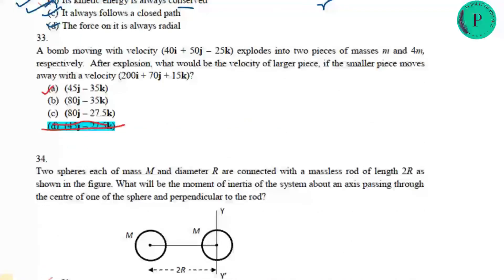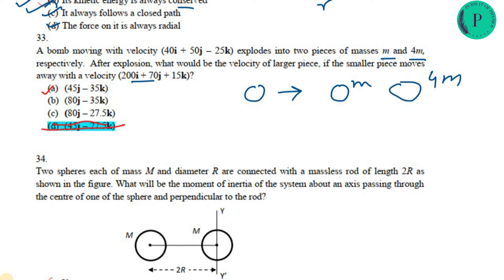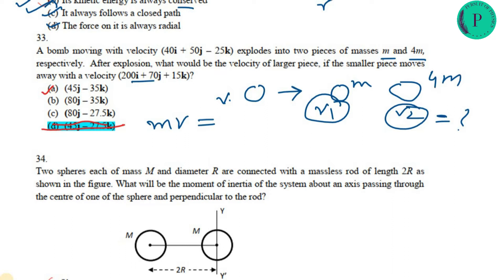Next, a bomb moving with a given velocity explodes into two pieces of mass m and 4m. After the explosion, given the velocity of the smaller piece, you need to find the velocity of the larger piece. Using linear momentum conservation — total mass is 5m — after all calculations you get the answer as 45j − 35k cap.